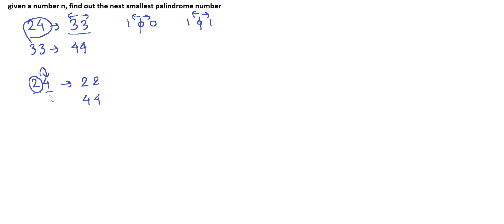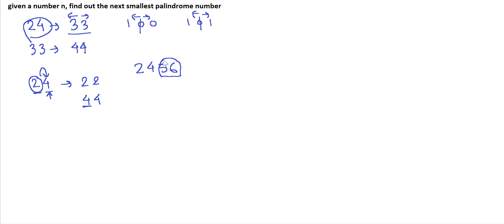Both answers are not right, but we'll take the approach of reversing the left side. We don't take the approach of reversing the right side because it is heavily dependent on the units digit — if the units digit is large, the overall number becomes very big. For example, with 2456, reversing the right part and replacing the left gives 6556, which is far larger than 2456.